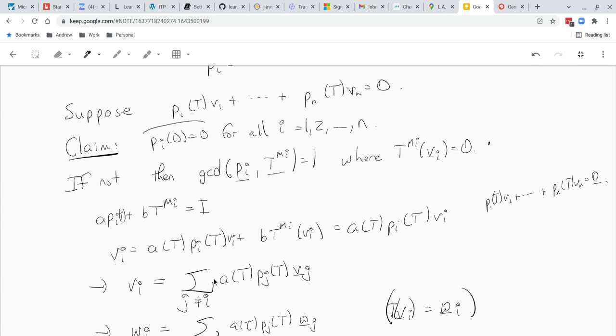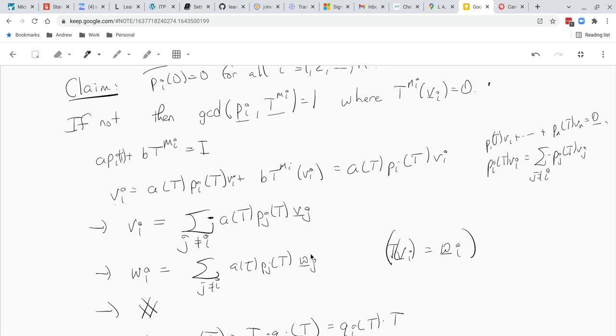So just write that as, oh yeah, here's a minus one, should be a minus sign here. But write that as the equation Pi of T Vi is equal to the summation minus Pj of T Vj where j is not equal to i. And I'll multiply both sides by A of T. And A of T Pi of T of Vi is just Vi. And on the right-hand side we have minus A of T Pj of T Vj. Now just apply T.